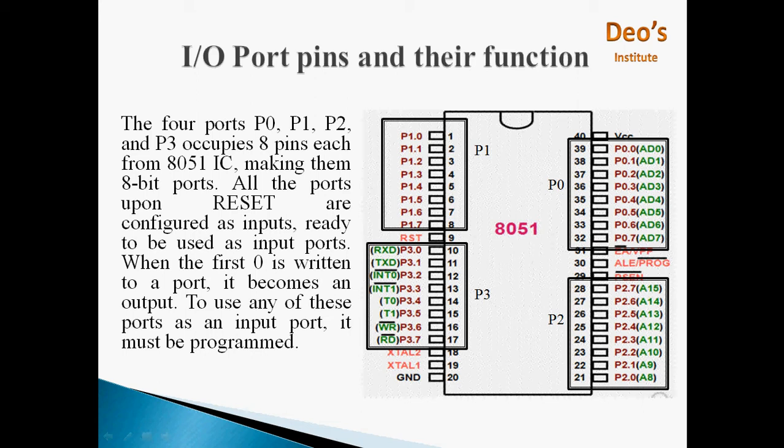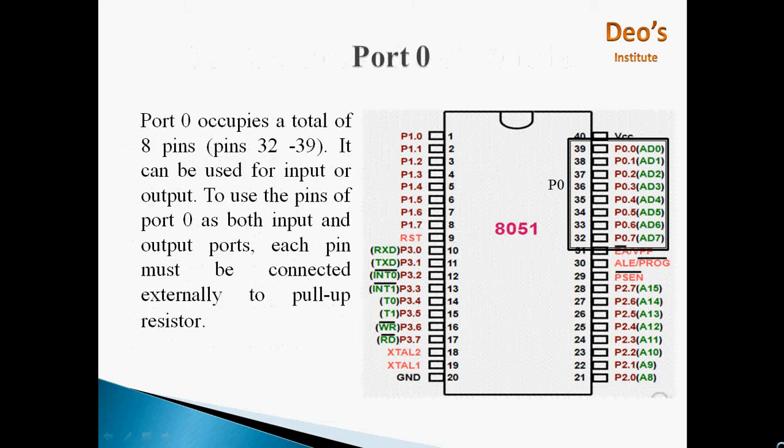Let us start with port 0, that is P0. Port 0 occupies total 8 pins, pin number 32 to pin number 39. It can be used for input or output. These are IO PINs. To use these pins of port 0 as both input and output ports, each pin must be connected to pull-up resistor externally.